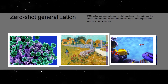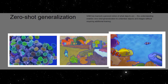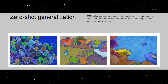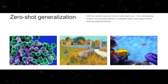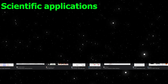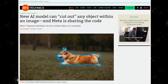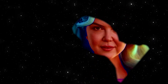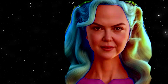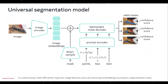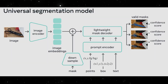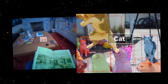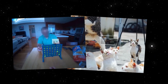Image segmentation is a core task in computer vision that involves identifying which pixels in an image belong to a specific object. This task is essential for a wide range of applications, from scientific image analysis to photo editing. However, creating an accurate segmentation model for specific tasks typically requires highly specialized work by technical experts with access to AI training infrastructure and large volumes of carefully annotated in-domain data. This is where the Segment Anything project comes in.